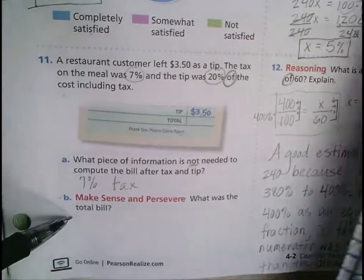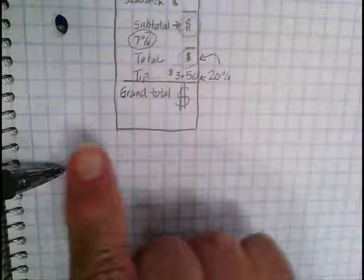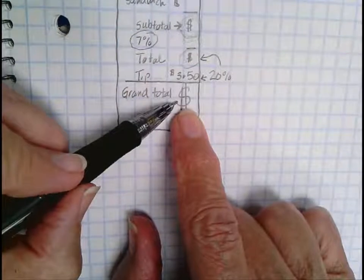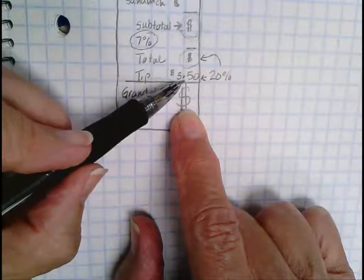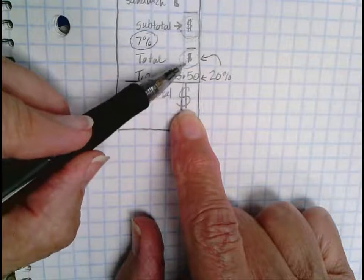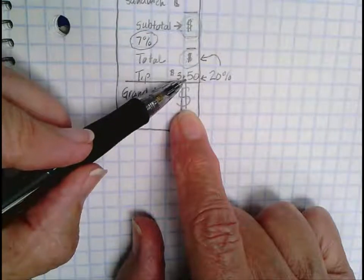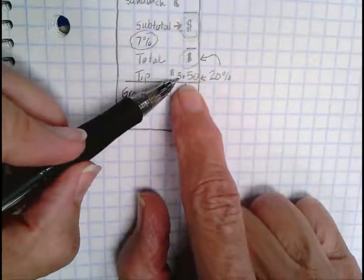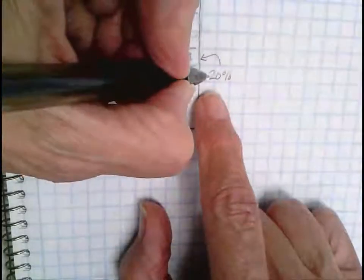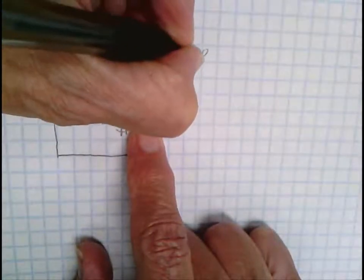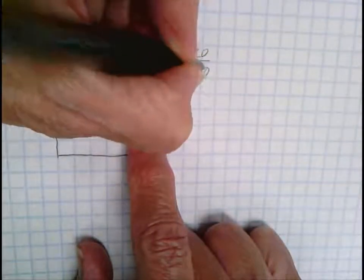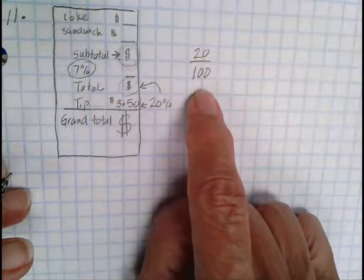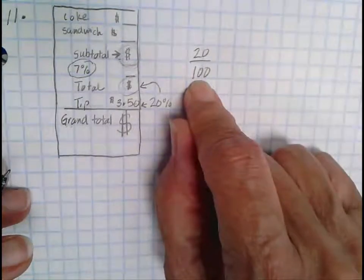So the last one is, what was the total bill? Well, the total bill they're asking about is the grand total. So the first thing I have to do is figure out the relationship between the tip and this total. We're going to use 20% and write it as a fraction equivalent to 20%. So I put 20 over 100. 100 is always my denominator.